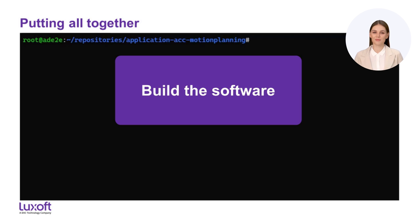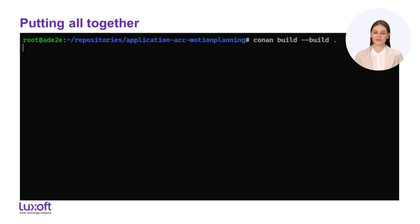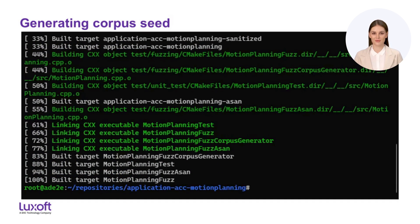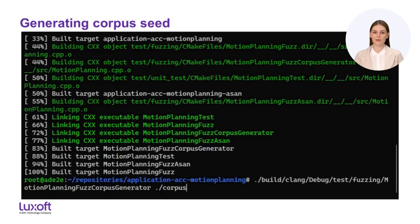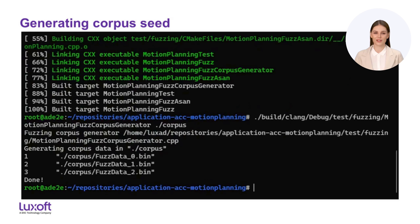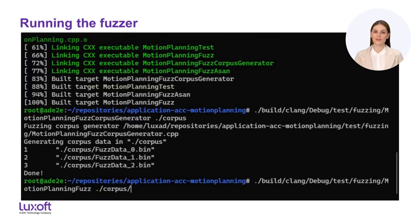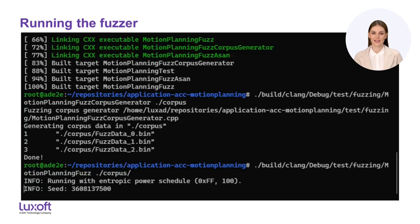Now let us build our software component along with the fuzz target and corpus seed generator. Because we have just started our fuzzing journey and the fuzz corpus is empty, we run our corpus seed generator to provide the fuzzer with initial data. We run the fuzz target with the corpus directory containing the initial seed data. The fuzzer takes this data and starts modifying it to discover new code paths.